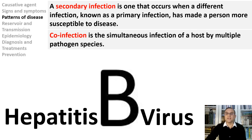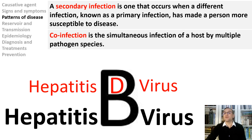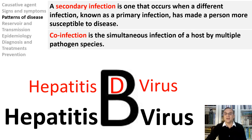An example of co-infection is infection with hepatitis D virus. In order to be infected with hepatitis D, one has to be infected with hepatitis B virus, because hepatitis D virus requires the presence of hepatitis B to propagate — placing it in a category of subviral satellite viruses. Hepatitis D is considered both a co-infection and a super-infection.